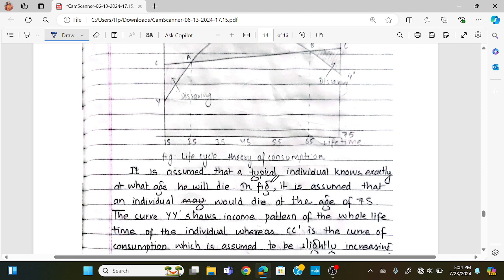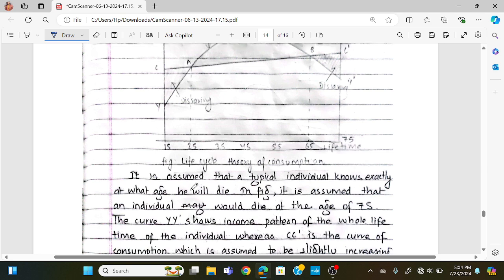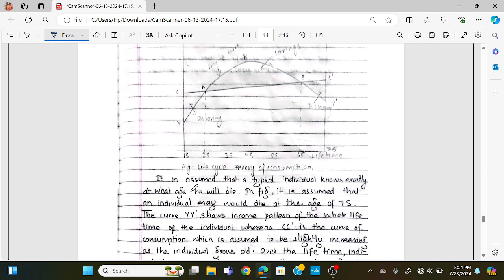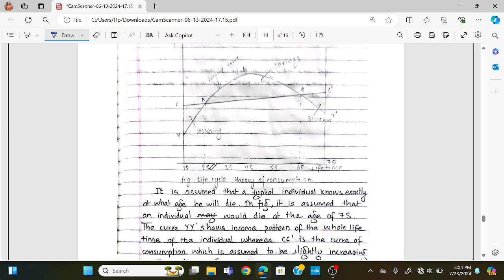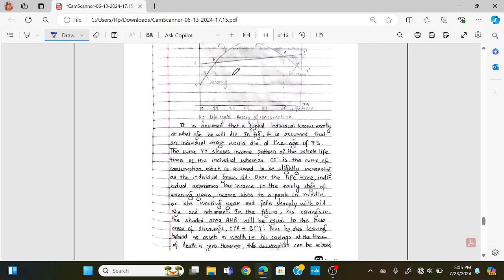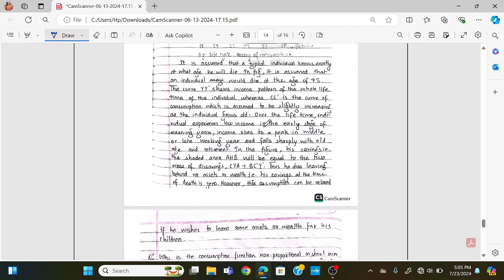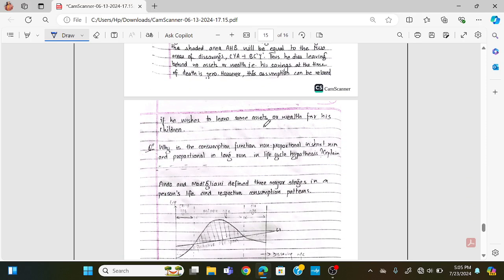It is assumed that a typical individual knows at what age they will die. The income pattern over the whole lifetime of an individual follows a certain curve, while the consumption pattern remains relatively stable throughout life.